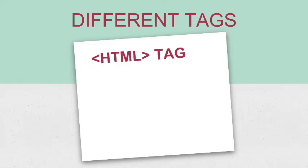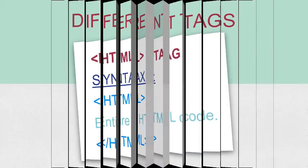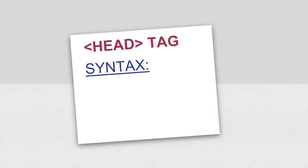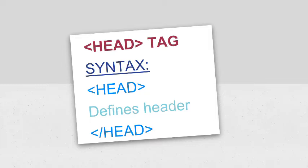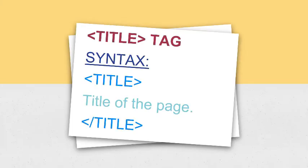Now we will learn about different types of tags used in an HTML document. The HTML tag identifies that it is a standard HTML document — you can see the syntax on screen; it is a container tag. The head tag defines the HTML document header, is written just below the HTML tag, and contains the document title, character set, styles, links and script — it is also a container tag. The title tag is used within the head tags and contains the title of the web page which will be displayed in the title bar; it is also a container tag.